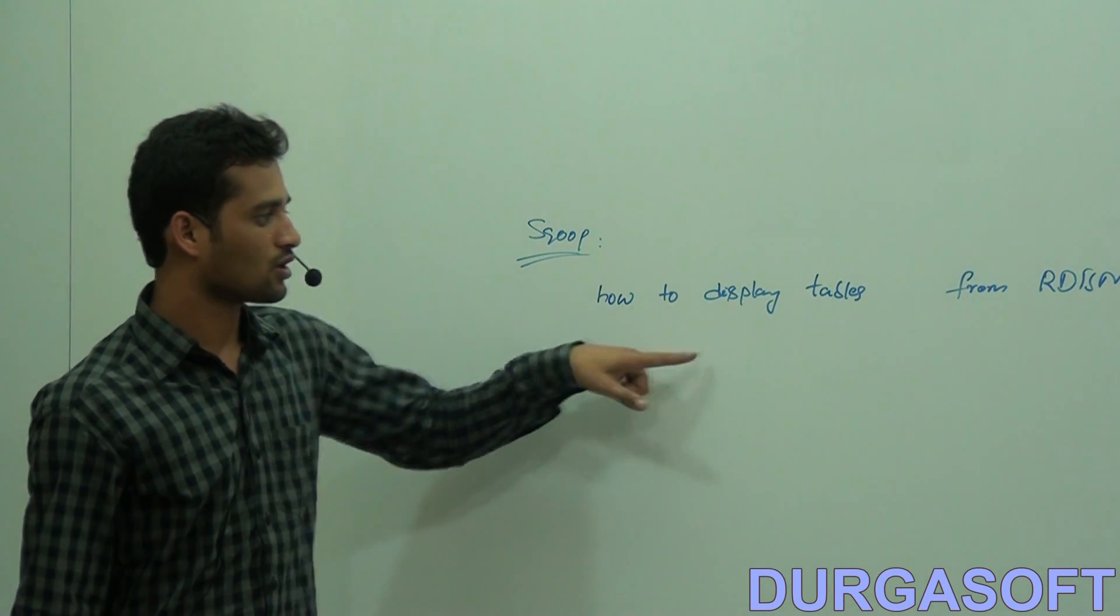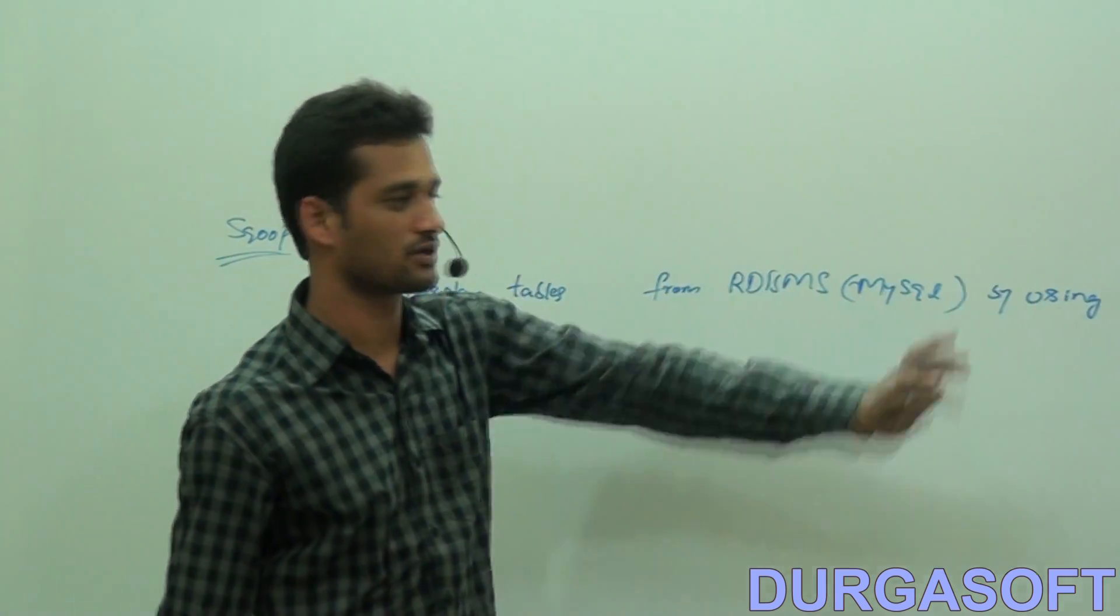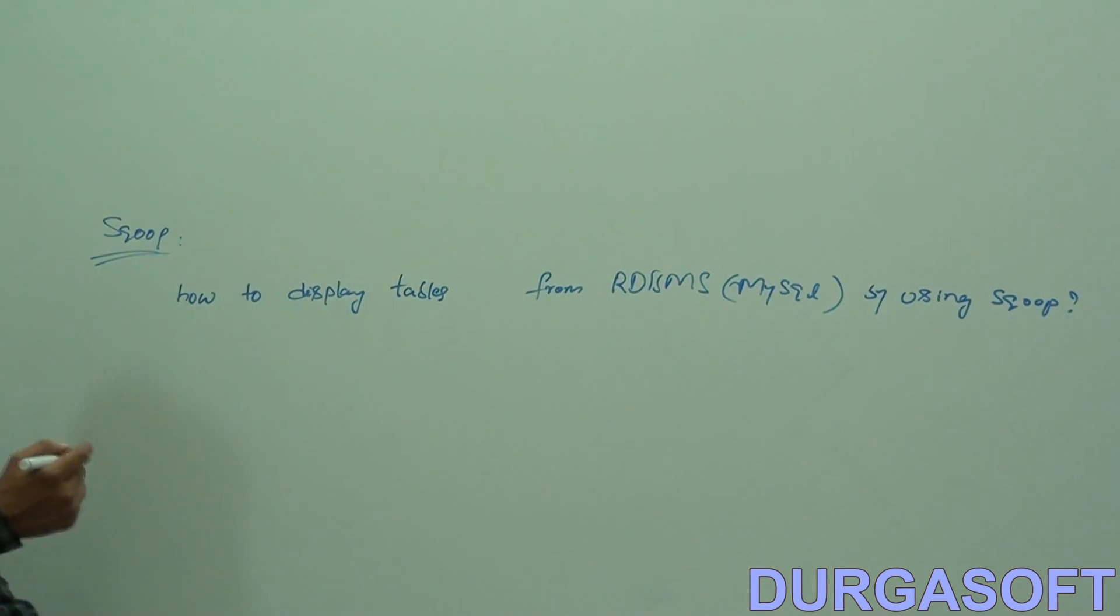So how to display tables from RDBMS from a specific database using Scoop? By using Scoop, you can give scoop space list-tables space backward slash.